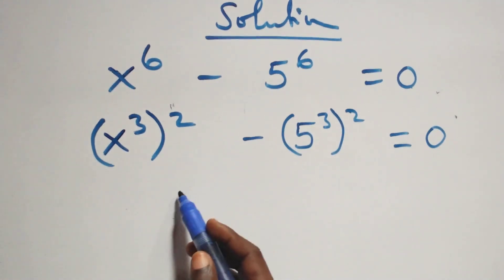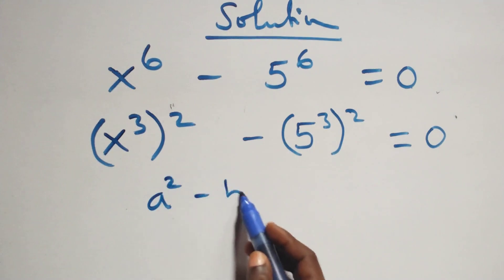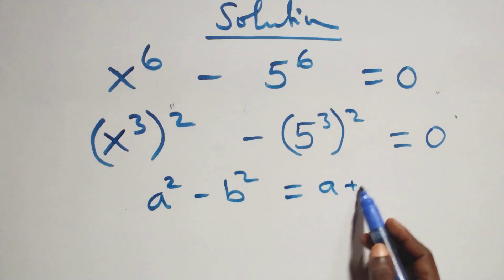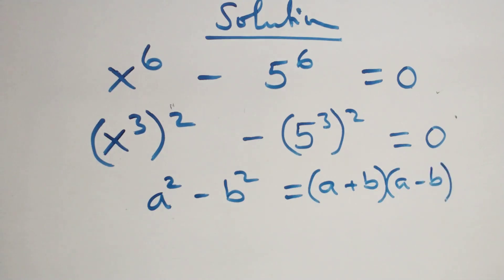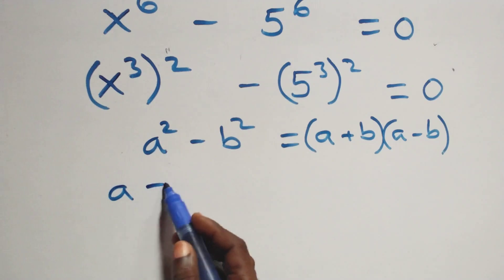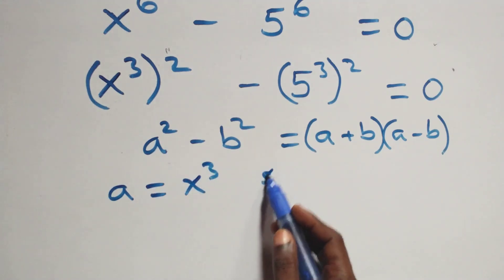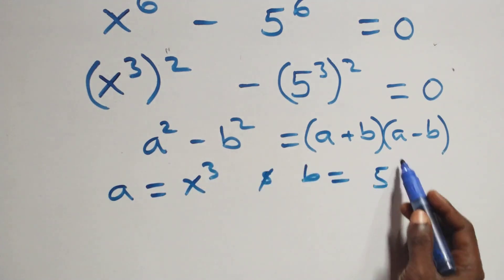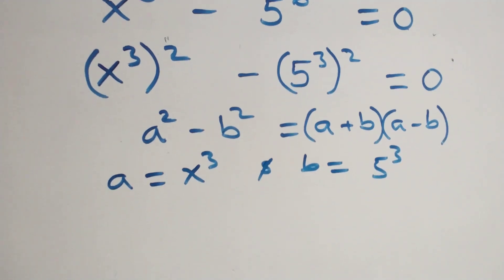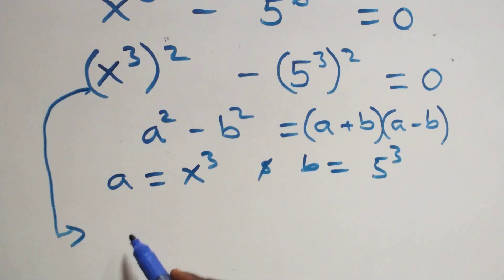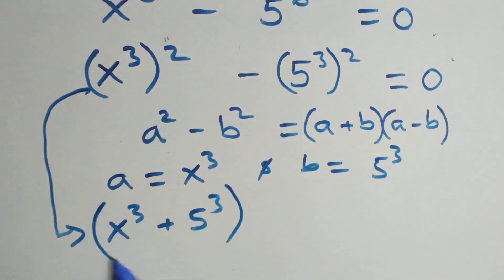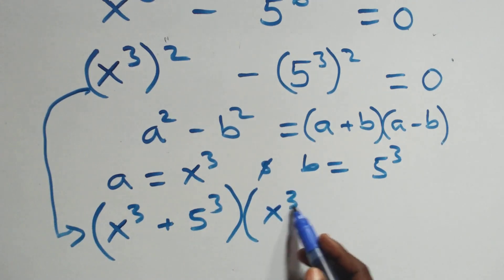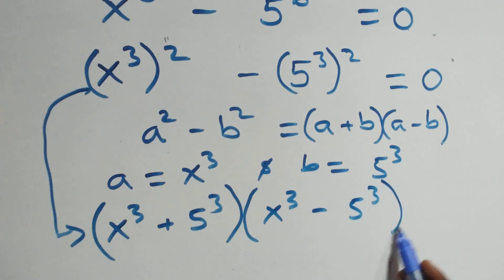Then from here, this follows. When we have a squared minus b squared, we have a plus b in brackets times a minus b. Here, a is standing as x cubed and b is standing as 5 cubed. So what we have becomes x cubed plus 5 cubed, times open brackets x cubed minus 5 cubed, equals to 0.